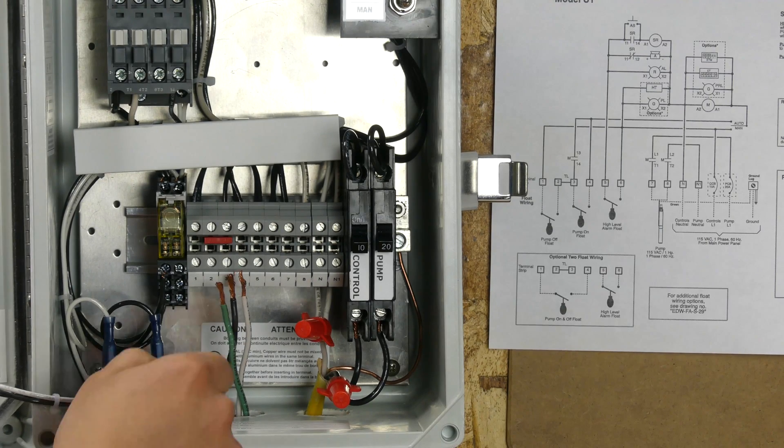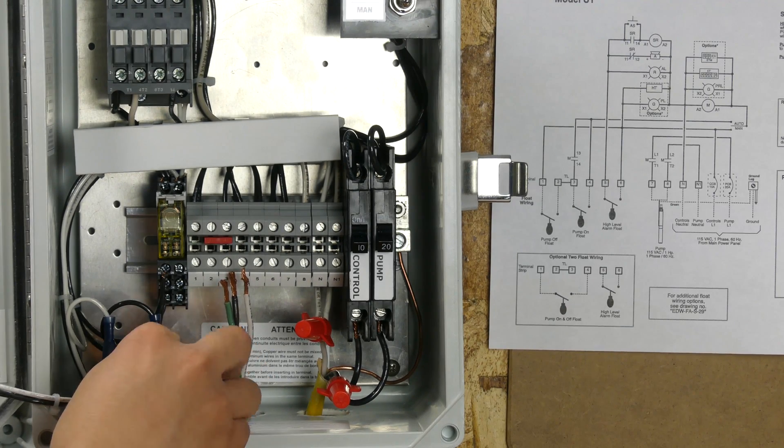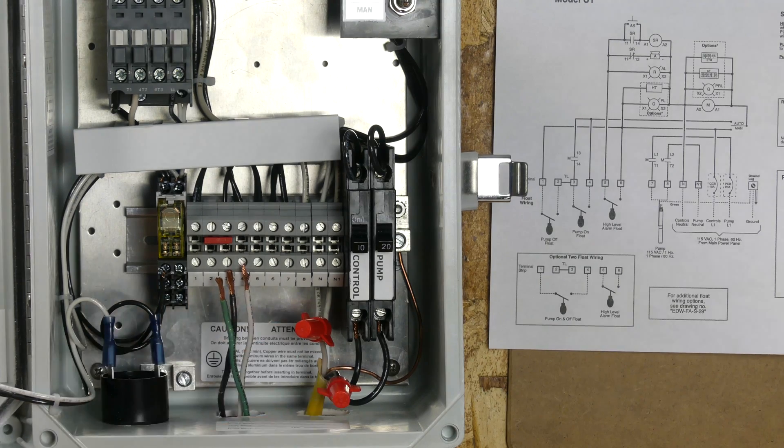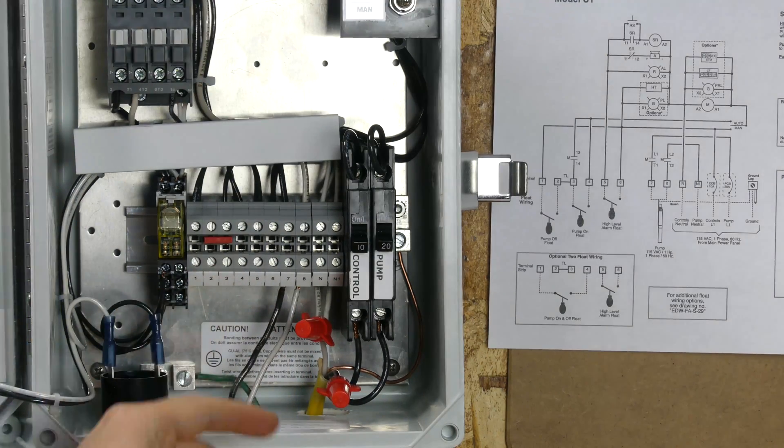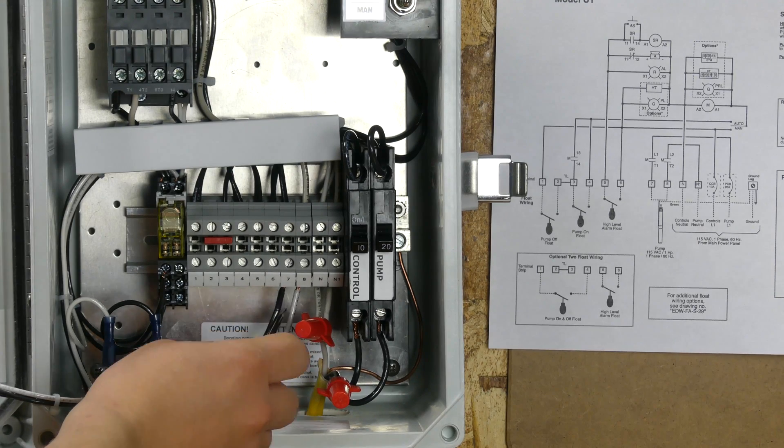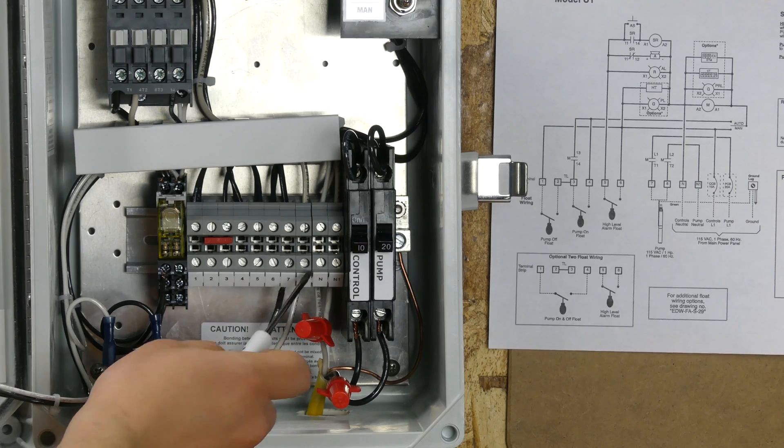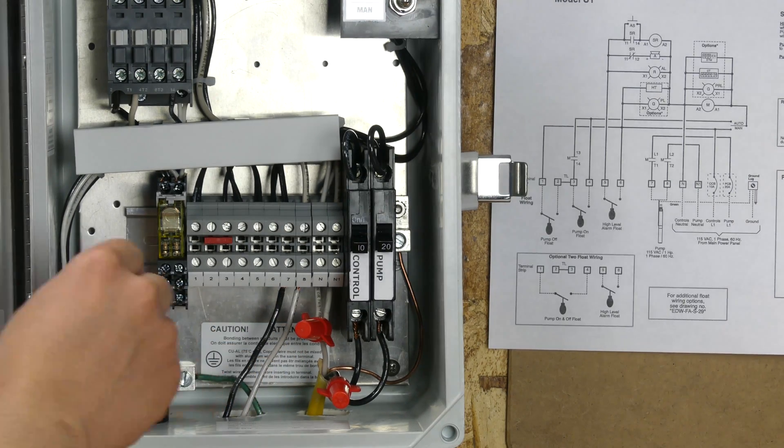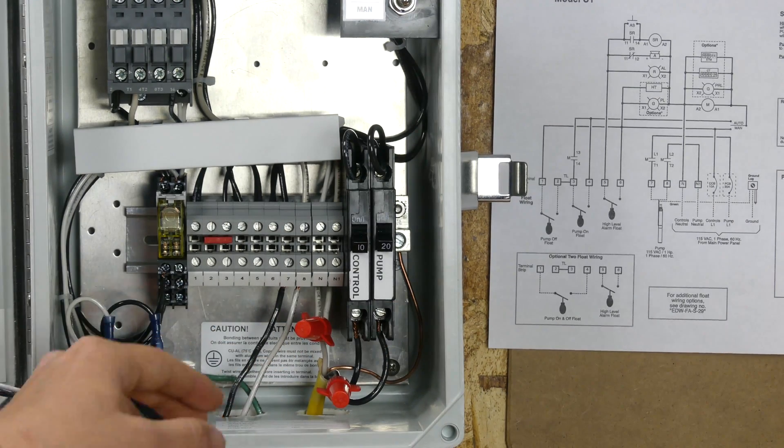We've pulled our pump cable through. We're going to land our ground right here on this lug, and then we'll go ahead and hook the other two wires up. We've got the pump hooked up. We've got the white wire or the neutral going to eight, the hot wire or L1 going to seven, and the ground of course is hooked up. Now we're ready to bring our three floats in.